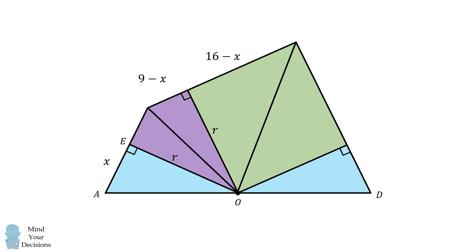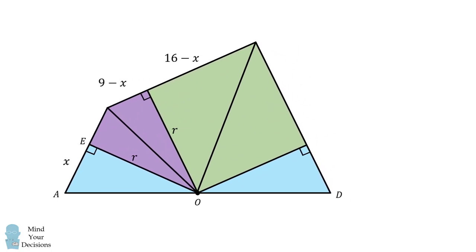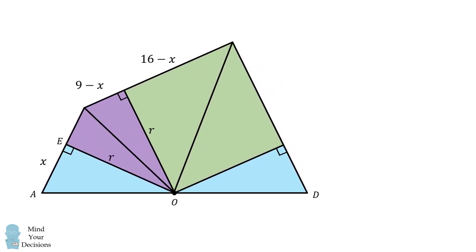Now let's just focus on the quadrilateral and some of the angles. Let's suppose that AOE has a value equal to theta. The corresponding angle in the other blue triangle will also be equal to theta. In the two purple triangles, let's suppose each of these angles is equal to alpha, and then in the two green triangles, let's suppose each of these angles is equal to beta. Since AD is a straight line, we will have 2 theta plus 2 alpha plus 2 beta is equal to 180 degrees. If we divide both sides of this equation by 2, we get theta plus alpha plus beta is equal to 90 degrees. In other words, alpha plus beta and theta are complementary.